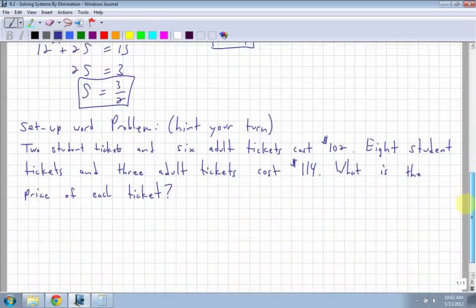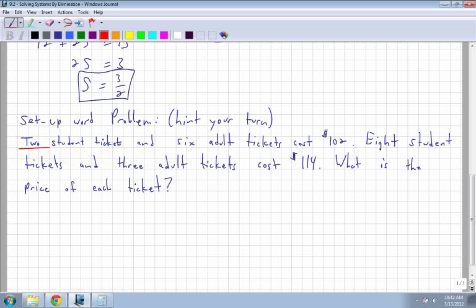Setting up word problems. This is going to be a hint for your turn question. So I got two students. Two student tickets. And six adult tickets cost $102. Then I have eight student tickets. And three adult tickets cost $114. What is the price of each ticket? So remember that we have to set up equations. So my first equation. Two student tickets. Well, you got to assign a variable for that. So let's call that s. Six adult tickets. Let's call that a. So two students are going to be two s and, which means plus, six adult tickets. So six a. Costs, which means equals $102. The second one, eight student tickets. So I have eight s and plus three adult tickets. Three adult tickets. Costs, so that's going to be equals again, $114.